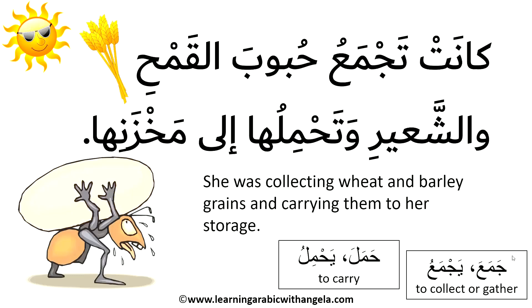كانت — referring to النملة the ant — كانت تجمع from verb جمع يجمع, to collect or gather something. In Arabic الجمع also means the plural or addition. حبوب means grains — it can also refer to pills or tablets: حبوب الدواء, medication tablets, or even zits on the face. The singular is حبة.